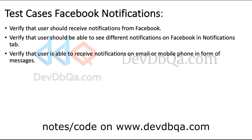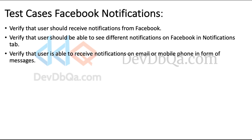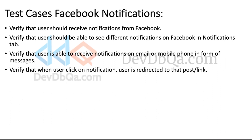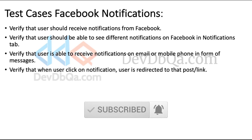Verify that user is able to receive notifications on email or mobile phone in the form of messages — notifications should be sent to the user's email or mobile phone number. Verify that when a user clicks on a notification, they are redirected to that post or link — clicking a notification opens the relevant post or link.